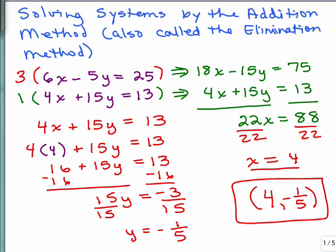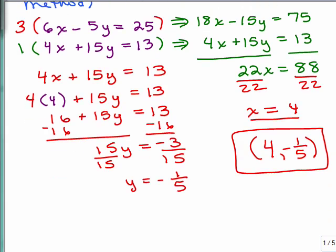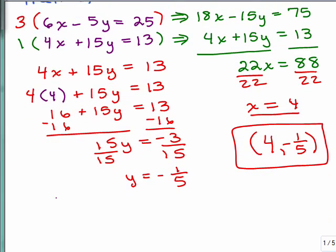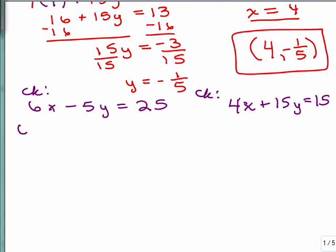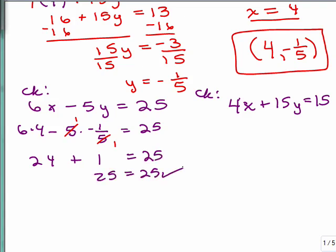Let's check and see if that really is the correct solution by plugging in 4 and negative one-fifth for X and Y into both of the original equations. Now we have to check that ordered pair into both of the original. So one of them was 6X minus 5Y equals 25, and then we're going to check it in 4X plus 15Y equals 13. We have 6 times 4 minus 5 times a negative one-fifth equal to 25. We have a minus sign and a negative so that's going to be plus, the 5s cancel. That's true - 25 is 25 - so it's certainly a solution to that equation.